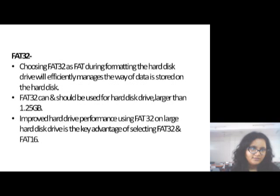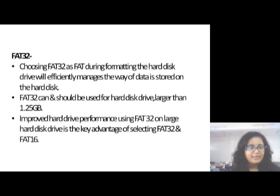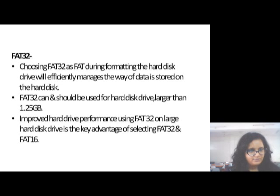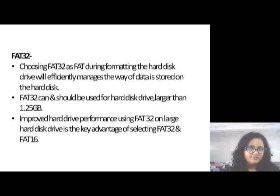Now, what is FAT32? Using FAT32 during formatting, the hard drive will efficiently manage the way data is stored on the hard drive. FAT32 can and should be used for hard drives larger than 1.25 GB. Improved hard drive performance using FAT32 on large hard drives is the key advantage of selecting FAT32 over FAT16.